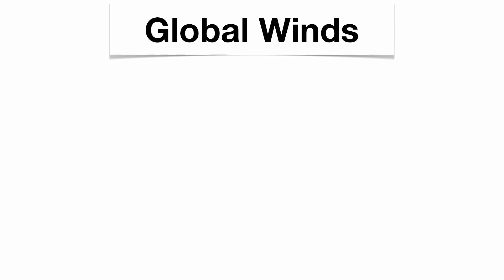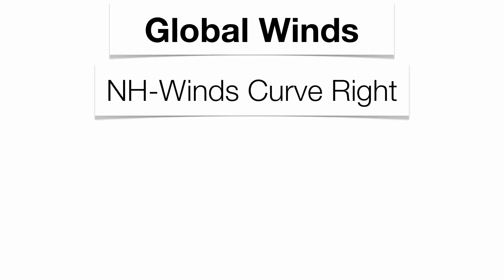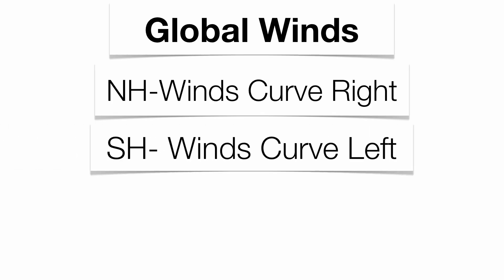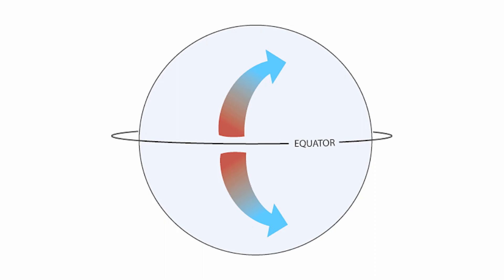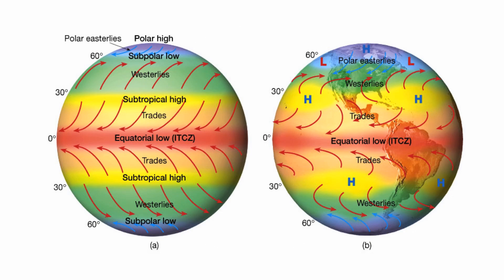We also have global winds. Because the Earth rotates on its axis, we get a phenomenon called the Coriolis effect. In the northern hemisphere all winds curve to the right, and in the southern hemisphere all winds curve to the left — all due to Earth's rotation. Winds always blow from high pressure to low pressure, so where you have high pressure is where winds start, and low pressure is where they blow toward.